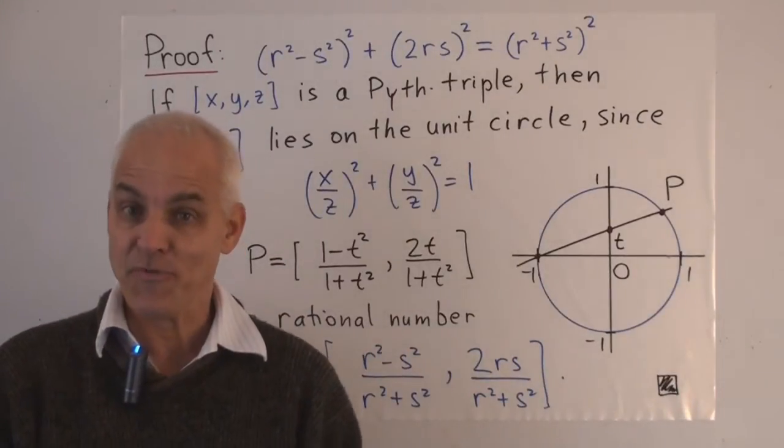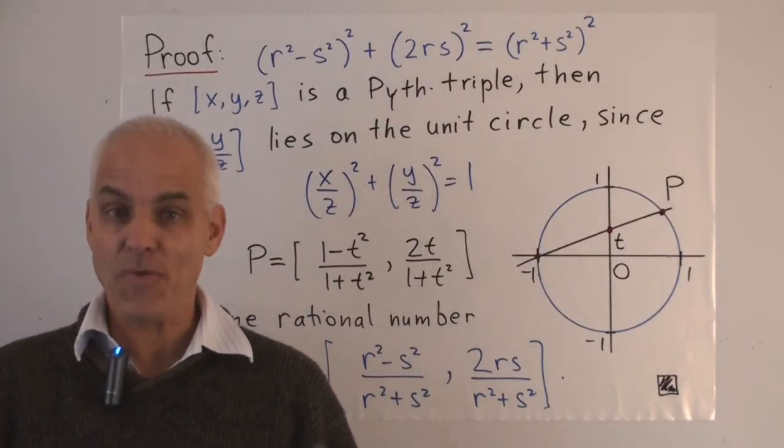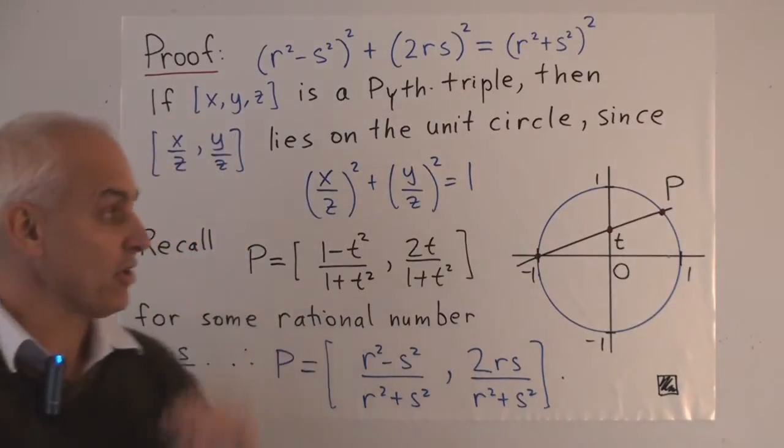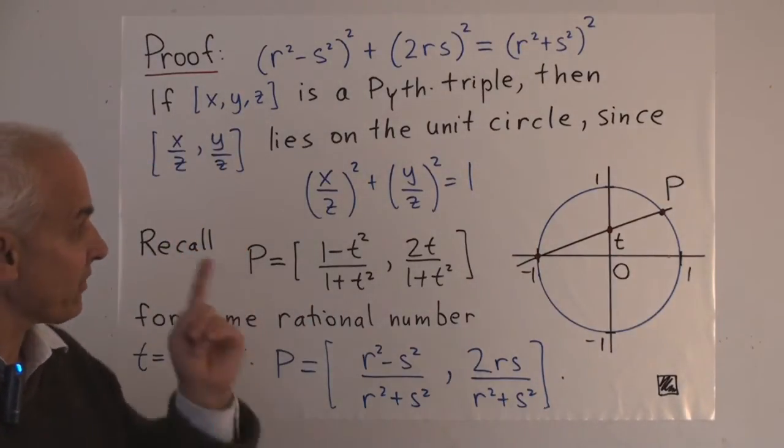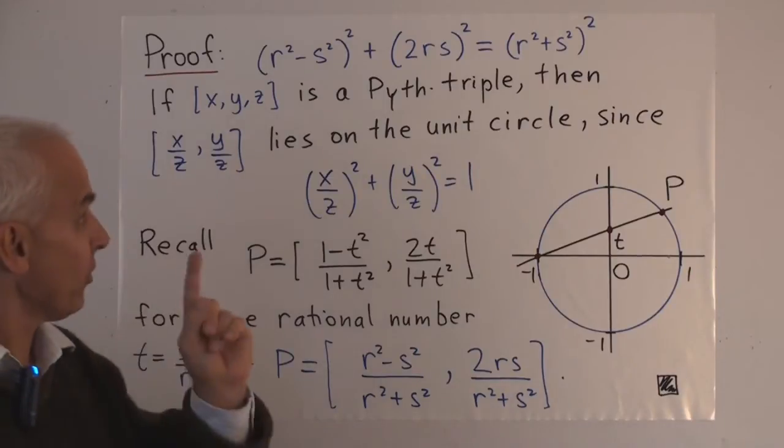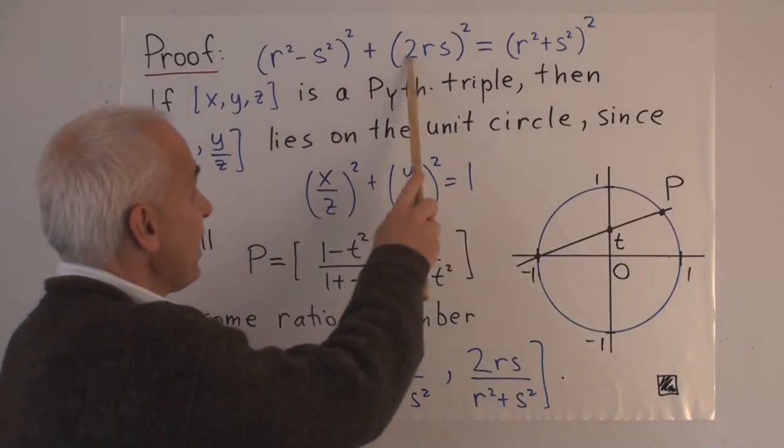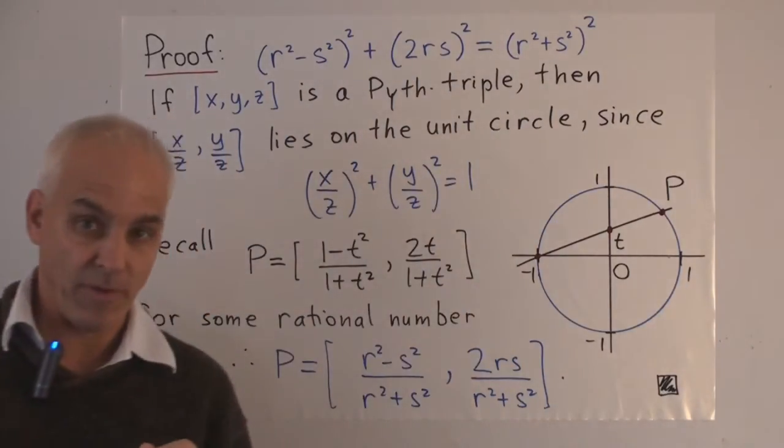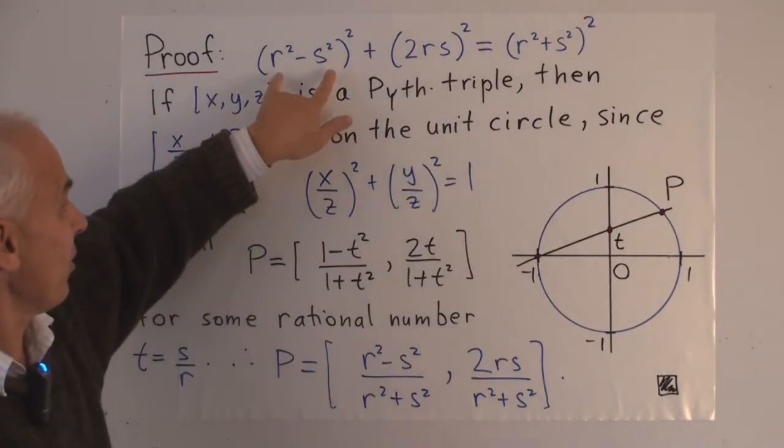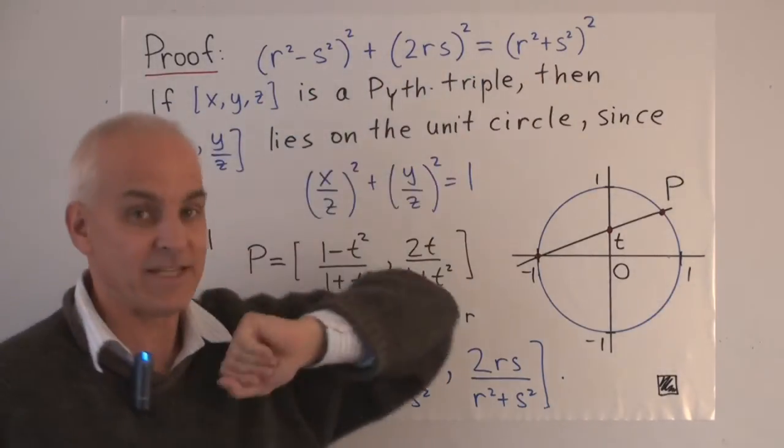So now let's talk about the proof of this theorem. How do we know that every reduced Pythagorean triple has that particular form? Well, first of all, let's just make sure that we know that these three numbers really do form a Pythagorean triple because of this identity that we've talked about already several times.